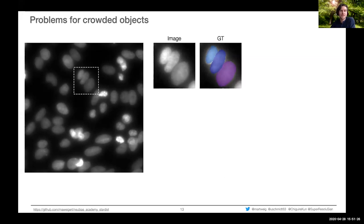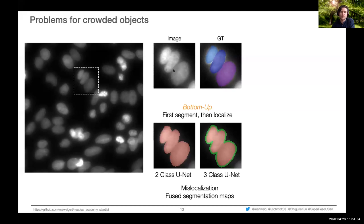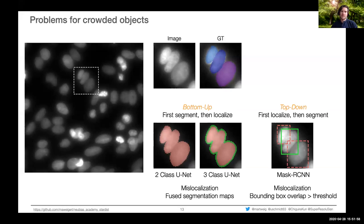The problem with both approaches in crowded, noisy images: in bottom-up, touching crowded objects get merged because foreground-background segmentation fuses nearby cells. In top-down, bounding boxes are poor approximations of nuclei shapes — the bounding box of a central cell may overlap too much with neighbors, causing those neighbors to be suppressed, leaving only the central cell. Both lead to mislocalization.